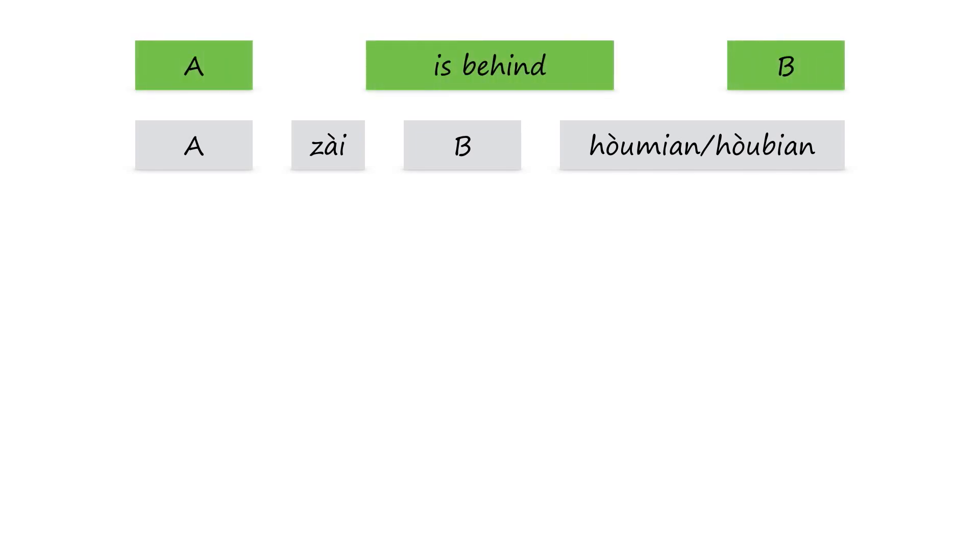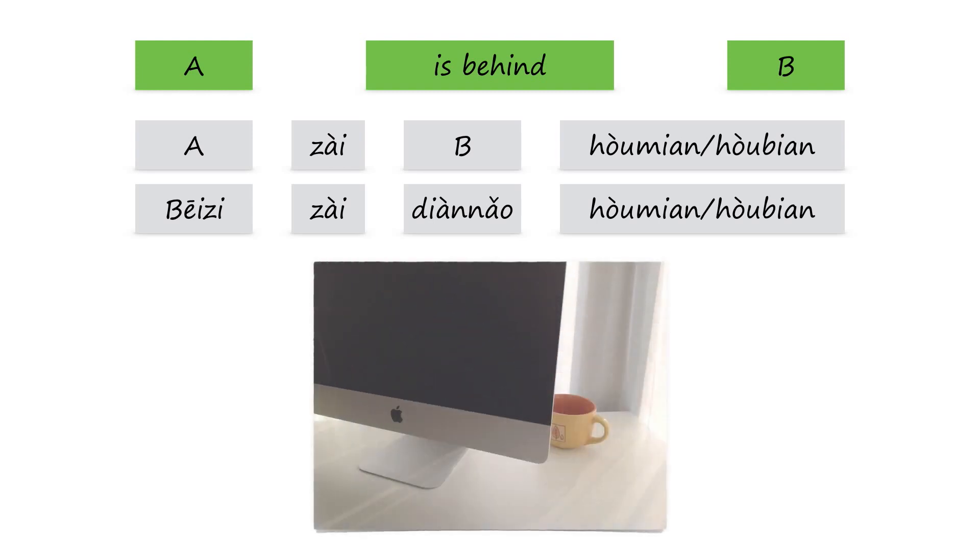We also learned A zai bi hou mian or hou bian, which means A is behind B. For example, 杯子在电脑后面. The cup is behind the computer.